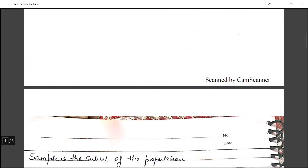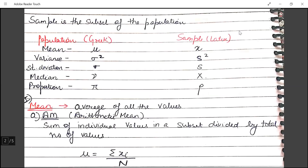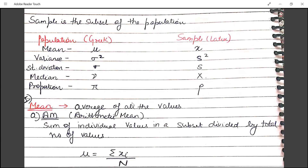We will first start with the mean. In case of mean, we basically take the average of all the values. The formula for mean is the sum of numbers divided by the number of samples. Mean could be of three types: arithmetic mean, geometric mean, or harmonic mean. We will discuss all three types with the help of an example.